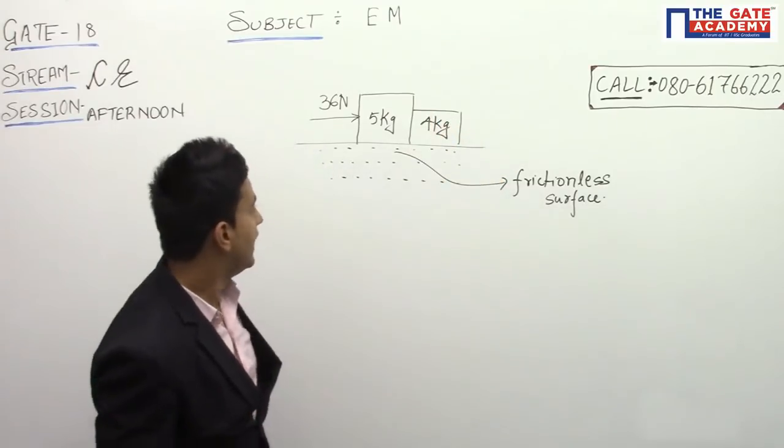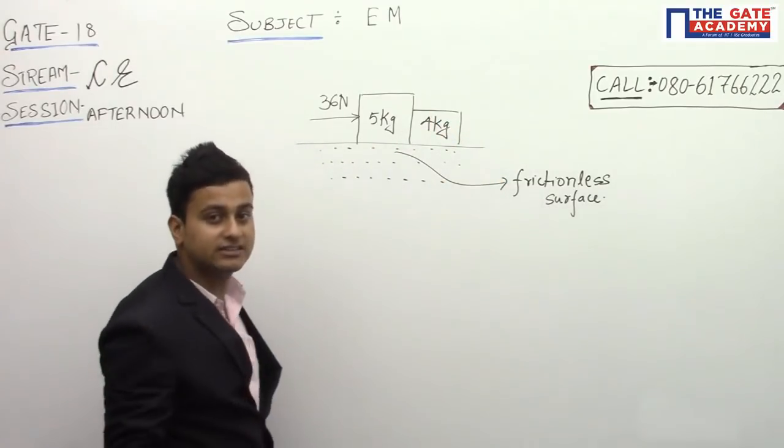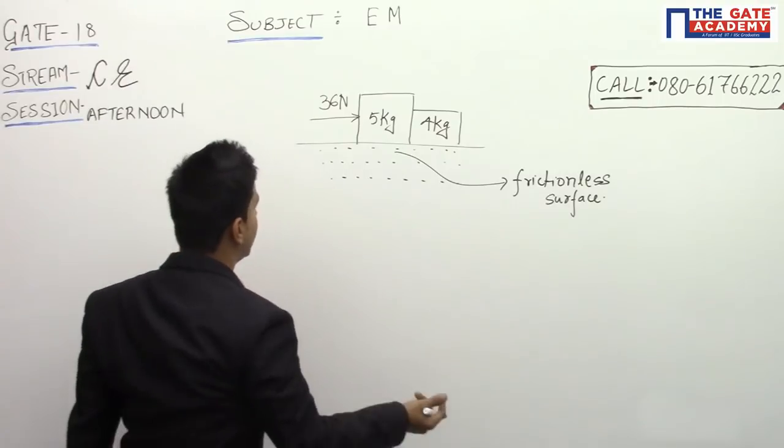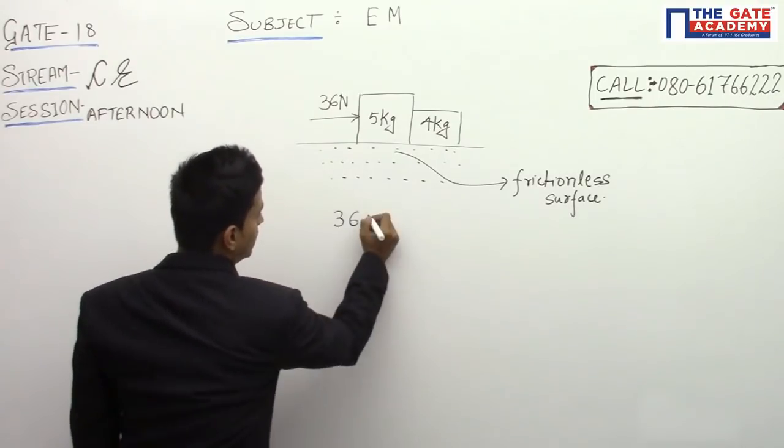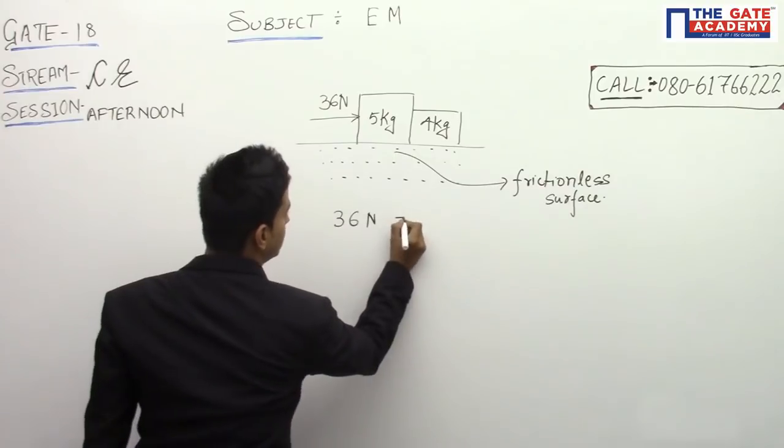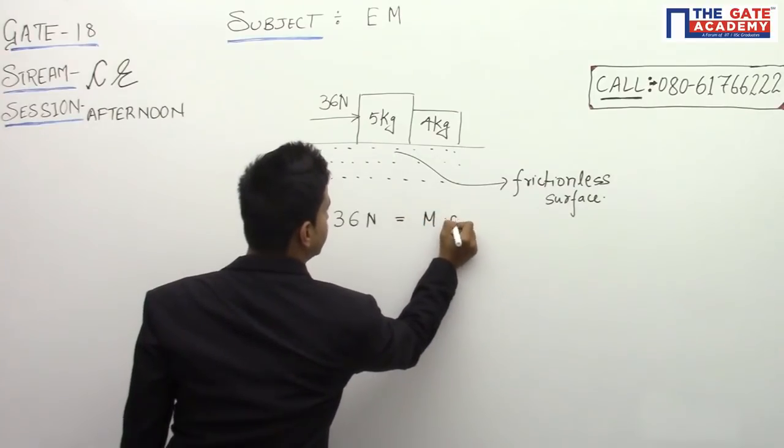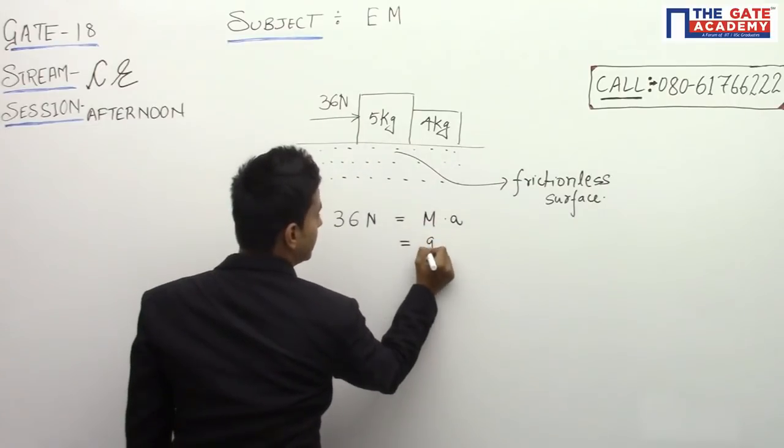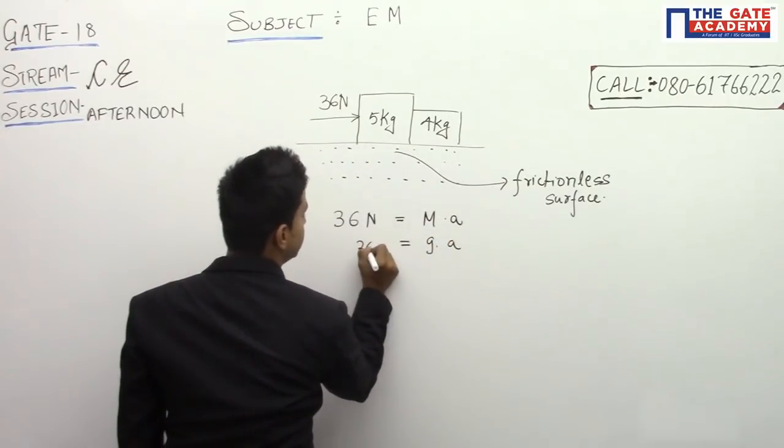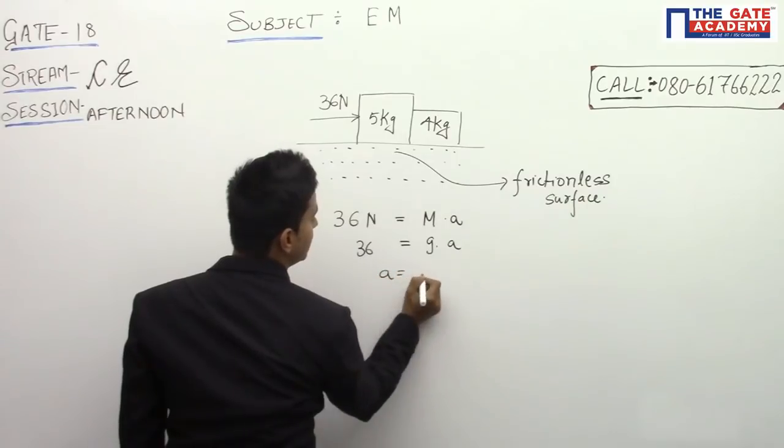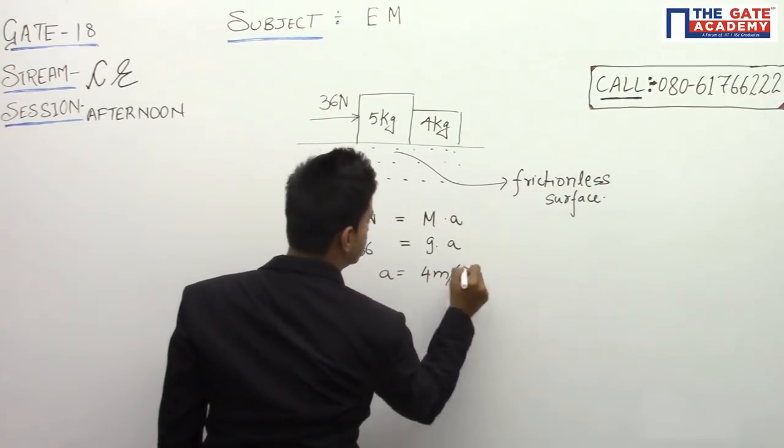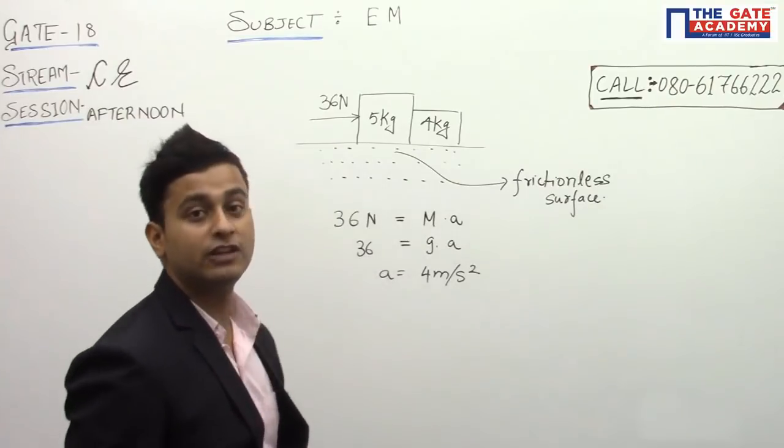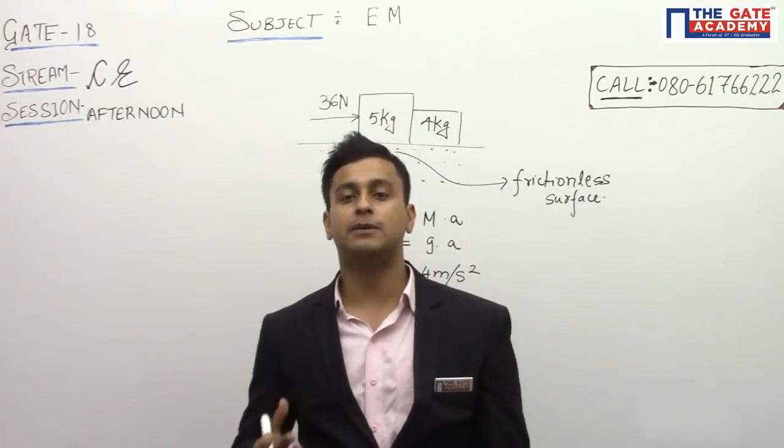Therefore, these two will move together with a similar acceleration. Net force will be equal to net mass into acceleration. So net mass M will be the addition of both, that will be 9 into acceleration, that is 36. Therefore, our acceleration will come out to be 4 meters per second squared. Both bodies will move with an acceleration of 4 meters per second squared.